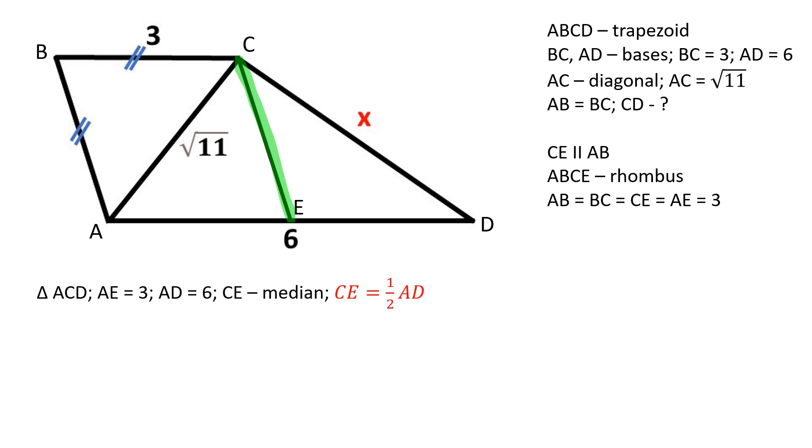And since CE is equal to half of AD, in a right triangle, the median to the hypotenuse is equal to half of the hypotenuse. Therefore, triangle ACD is a right triangle.